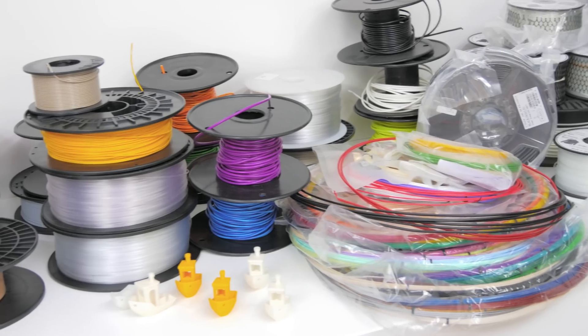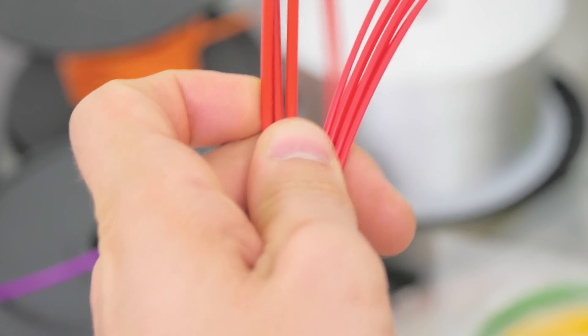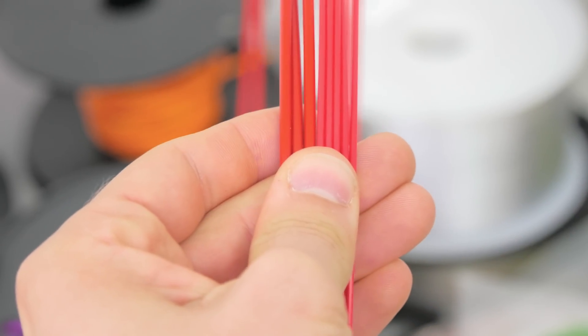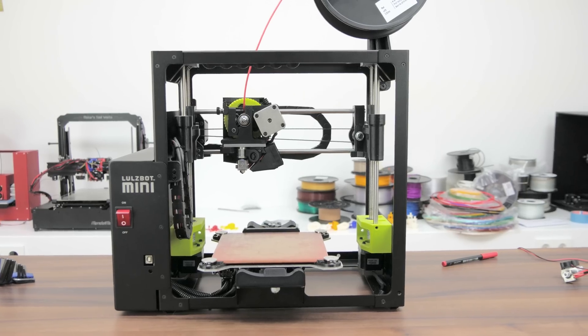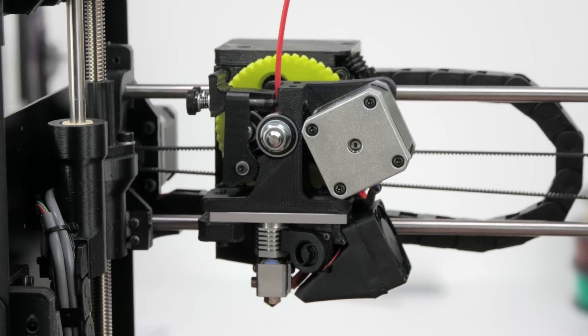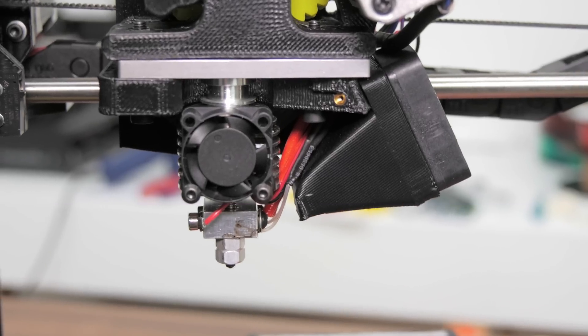There is 1.75mm and 3mm filament, and some printers use one and some use the other. There isn't really one size that's better than the others; there's excellent printers available in any size. But in this video I'm going to show you how to easily convert your 3mm printer to 1.75mm.